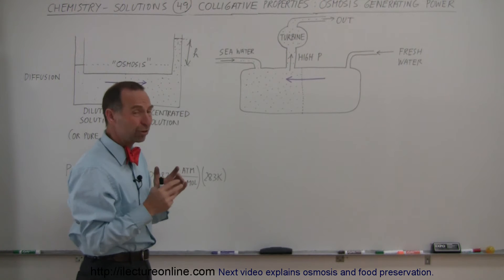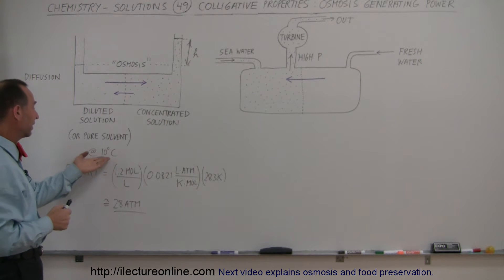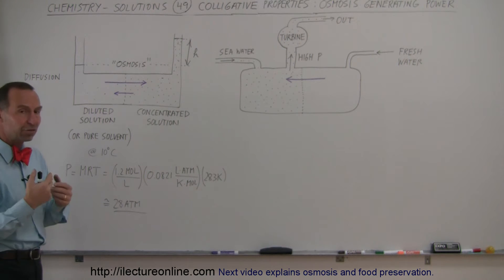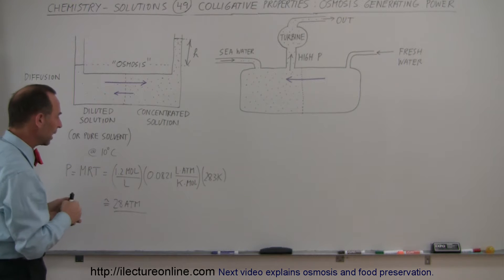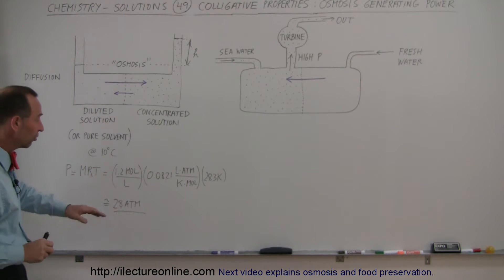That additional pressure is very high and we calculated it in the previous video. Let's say at 10 degrees centigrade, the pressure on the seawater side will be the molarity, which is about 1.2 moles per liter for the solutes—the sodium and chlorine ions which are the predominant constituents of seawater, at least the solutes in seawater.